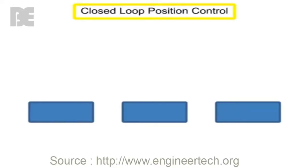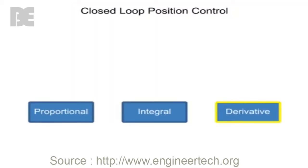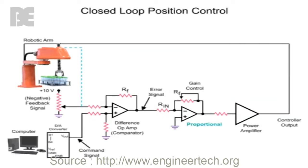A closed loop control system for position control is comprised of proportional, integral, and derivative circuits and is often referred to as a PID. The operation of PID mode control is demonstrated in the following robot arm position circuit.